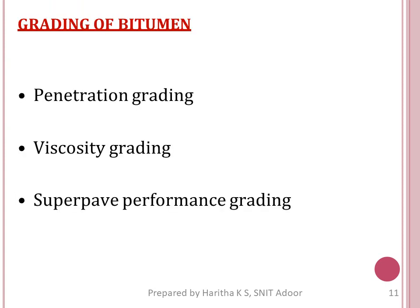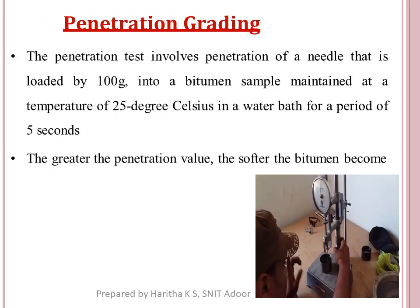The penetration test: a bitumen specimen is placed in a cylindrical mold in a water bath at 25 degrees Celsius. A 100-gram load is applied for a period of 5 seconds. The penetration value is measured in units of 0.1mm. Greater the penetration value, softer the bitumen. A higher penetration value means the bitumen is soft; a lower penetration value means the bitumen is hard.